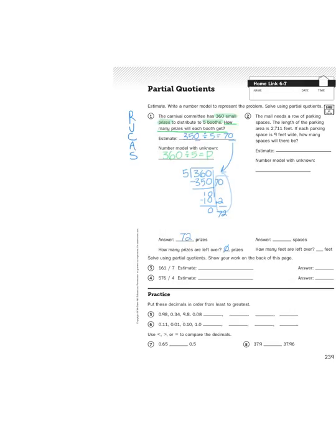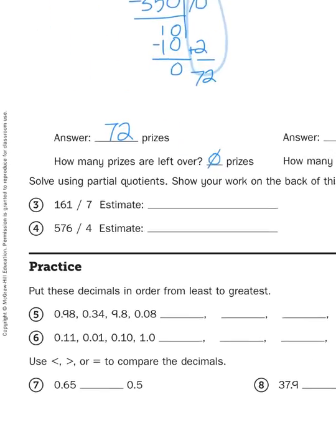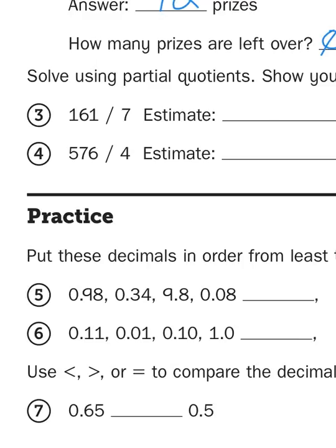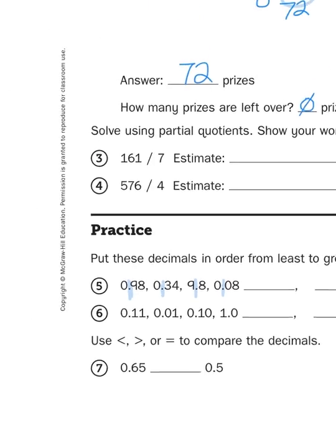Okay. Real quickly, let's look at the practice problems down at the bottom. Put these decimals in order from least to greatest. Well, we have to look at what number is to the left of my decimal point, what number is to the right. And again, least is littlest.